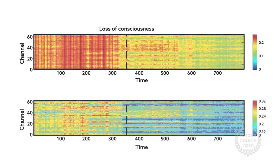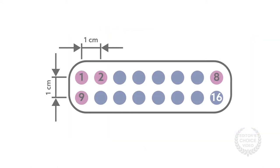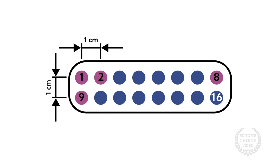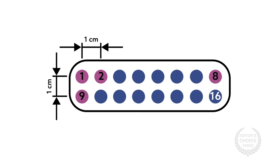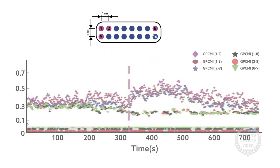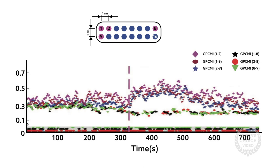In the same patient, the team also compared the connectivity of electrode pairs that were far apart or close together. Interestingly, the GPCMI values for nearby electrodes increased upon loss of consciousness.